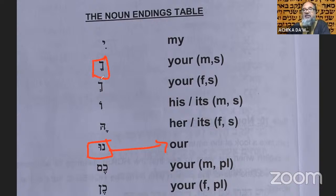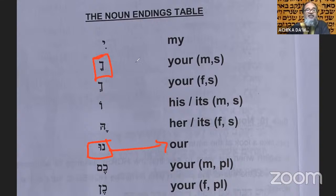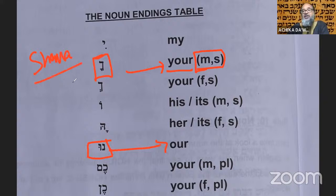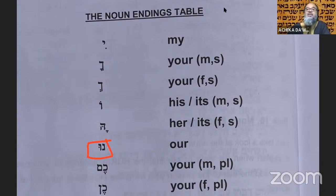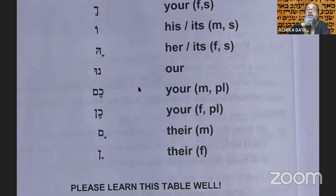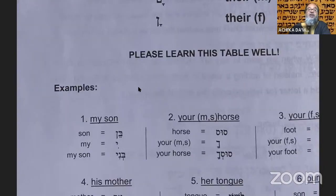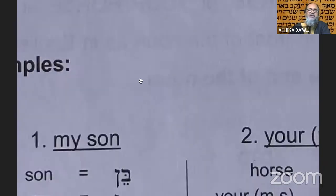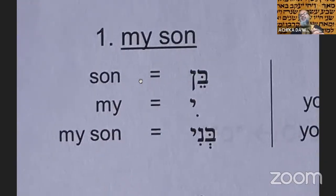Shema Yisrael, Yahweh Eloheinu — 'our Elohim.' You shall love: lavavka — you see the ka there. Shimka or nefeshka, me'odekha. When it says lavavka, nefeshka, me'odekha, he's talking to the individual even though the Shema is spoken to the whole nation. That's why knowing the language matters — you can see when he's directing his words specifically to you.